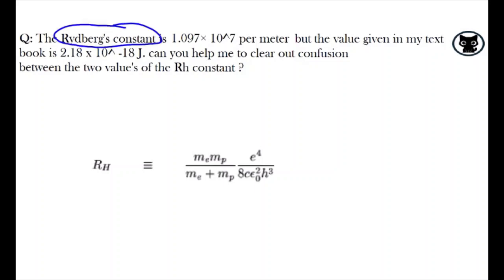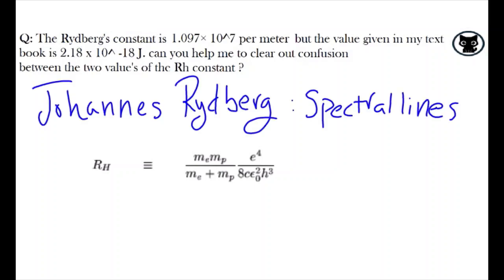Before I begin, let's first understand what exactly the Rydberg constant is. The Rydberg constant was developed by the Swedish physicist Johannes Rydberg, describing the frequencies of light in various series of related spectral lines.